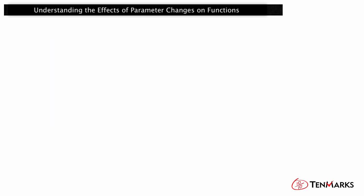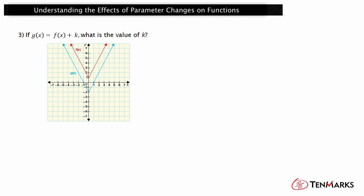Let's look at one more example. If g(x) = f(x) + k, what is the value of k? The notation f(x) + k, with the k being added to the function value, tells you that you are looking for a vertical translation. Each point shifted 3 units down. In a vertical translation, negative k values shift downward. So k must be negative 3. This transformation could be represented by the mapping g(x) = f(x) − 3.